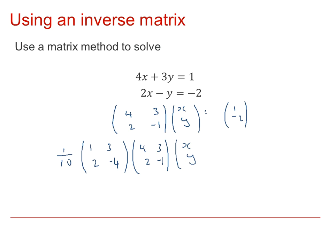But, of course, multiplying on the left-hand side, I must do exactly the same on the right-hand side. So, I get 1 tenth of (1, 3; 2, -4), multiplied by (1, -2).